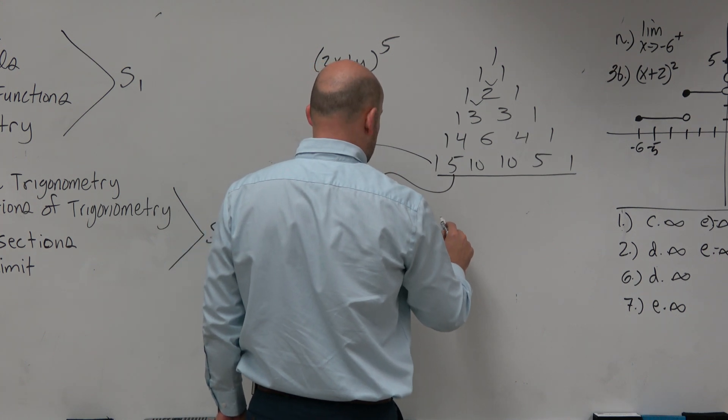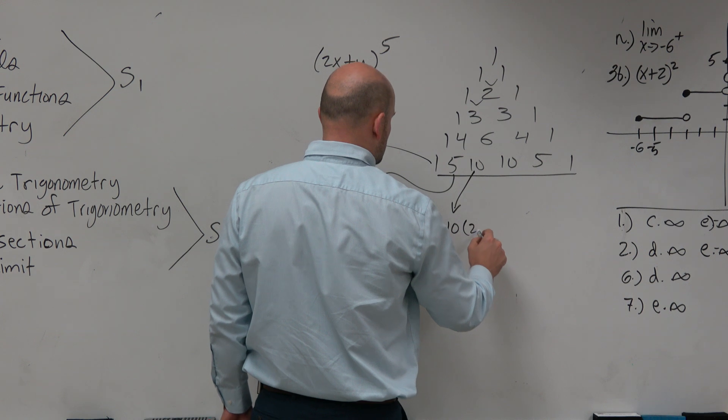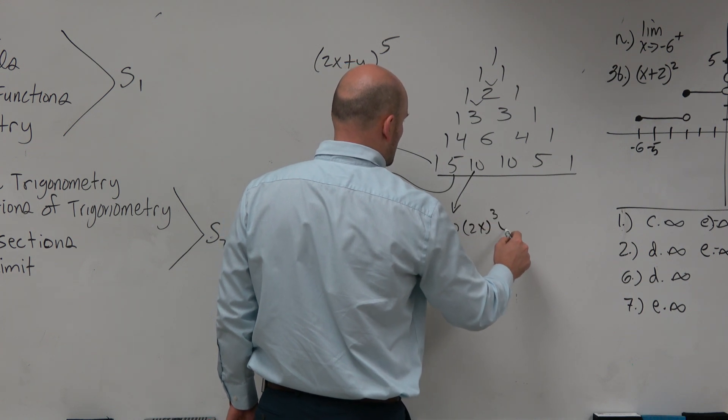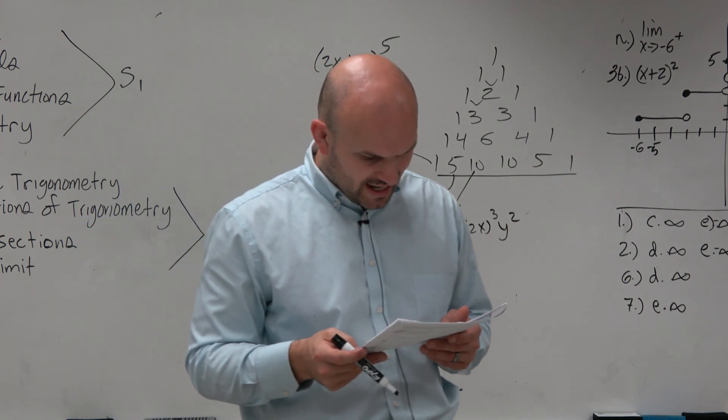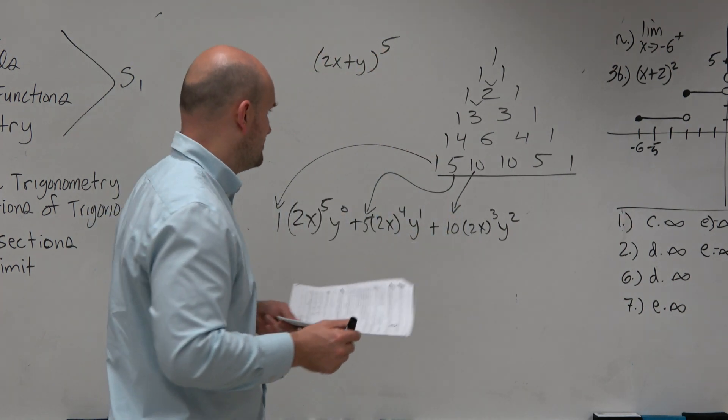And then our last term is plus, let's put a ten there. And this would be 2x cubed y squared. Now I believe all the answer choices all have, oh they don't. So we just need to figure out what that term is.